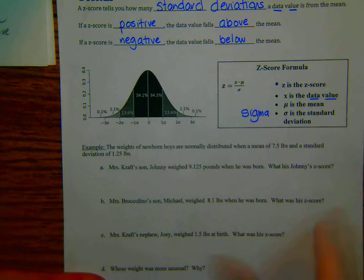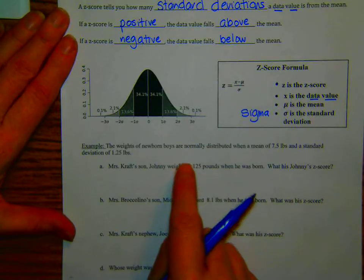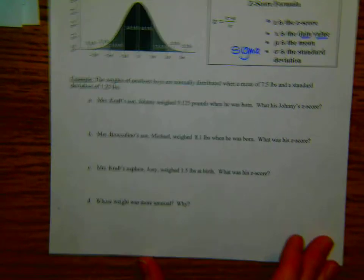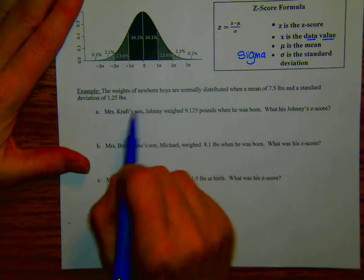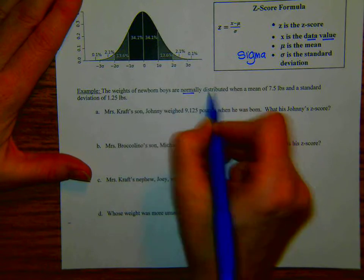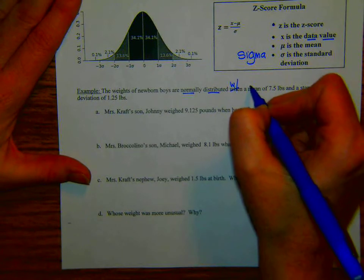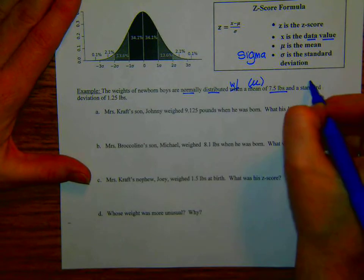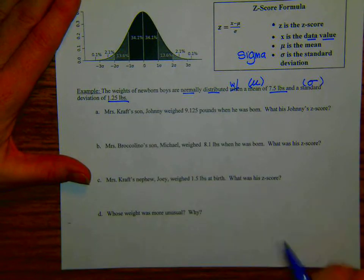So the best way to look at this is to look at an example. We're going to look at an example of birth weights for newborn baby boys. The weights of newborn boys are normally distributed with a mean, that's going to be mu, of 7.5 pounds and a standard deviation, that's our sigma character, a sigma of 1.25 pounds. So let's do some calculations.